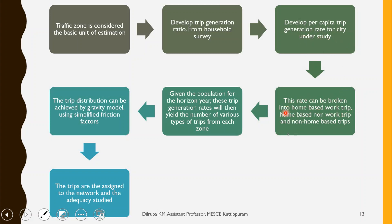Trip categories include home-based work trips, home-based non-work trips, and non-home-based trips. Given population for the horizon year, these trip generation rates yield the number of various types of trips from each zone. Trip distribution is then achieved by a gravity model using simplified friction factors, and trips are assigned to the network and adequacy is studied. This is how the quick response technique is carried out.